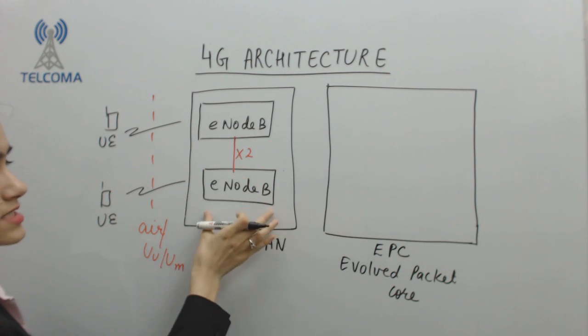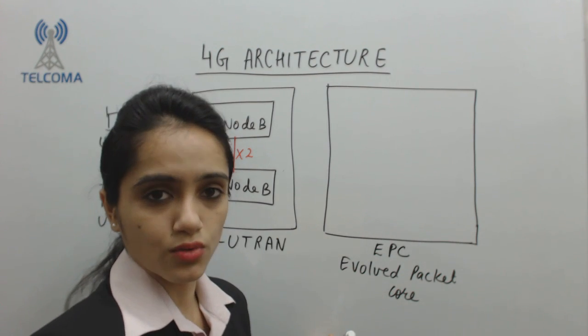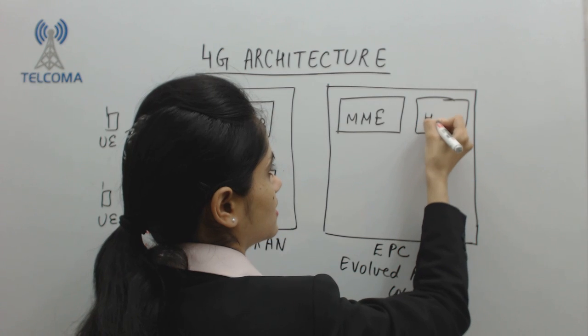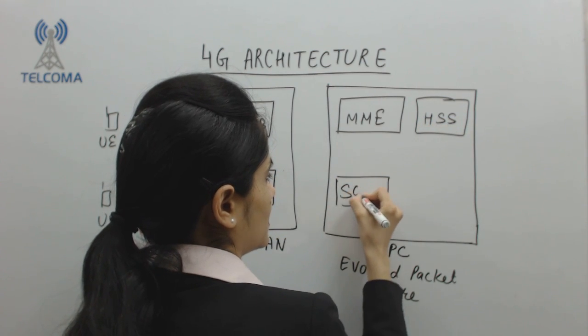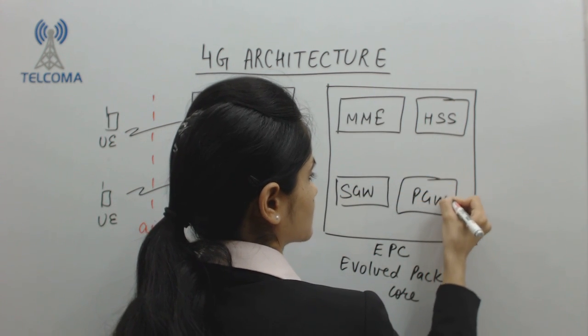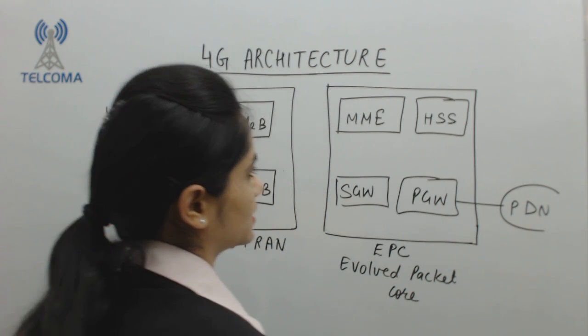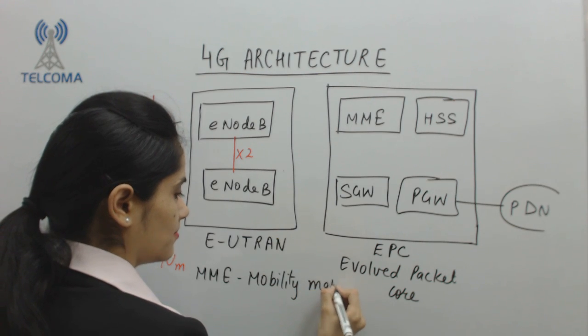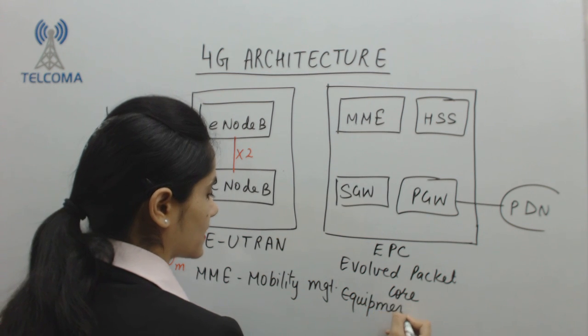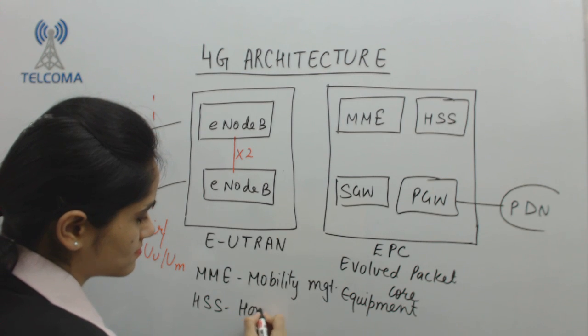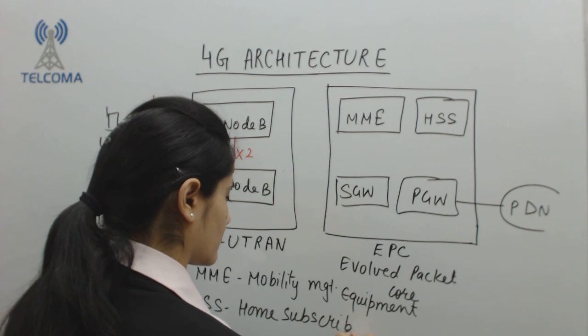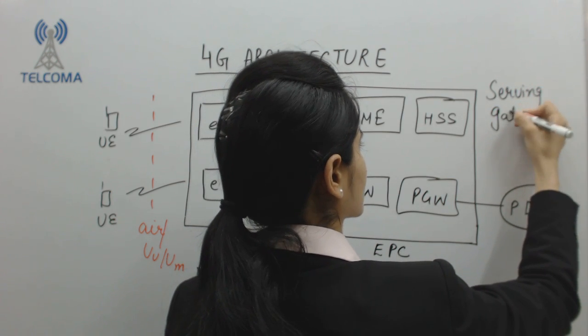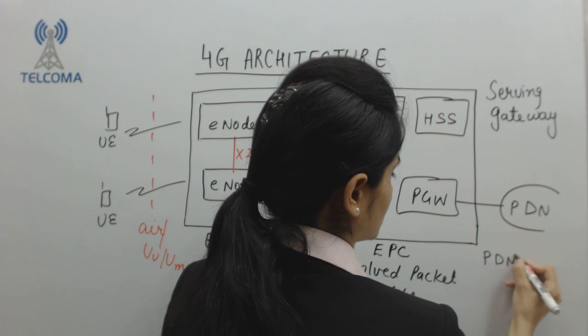Now let's move to the core network. The core network has entities: MME, HSS, SGW, and PGW. PGW is connected to external network which is PDN. MME stands for Mobility Management Equipment. HSS is Home Subscriber Server. SGW is Serving Gateway, and PGW is PDN Gateway.